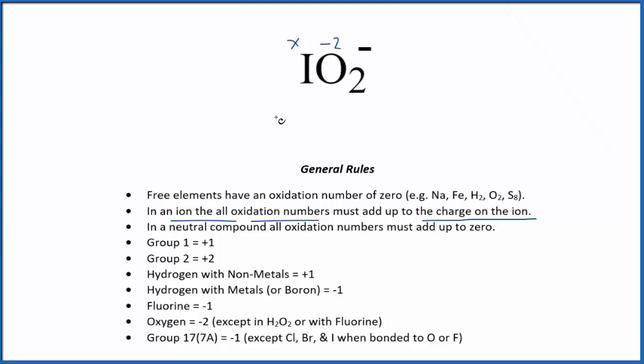So let's just set an equation up. X minus 2, and we have 2 oxygens, so multiply by 2, equals minus 1. So X minus 4 equals minus 1. Let's just add 4 to both sides. X equals a positive 3.